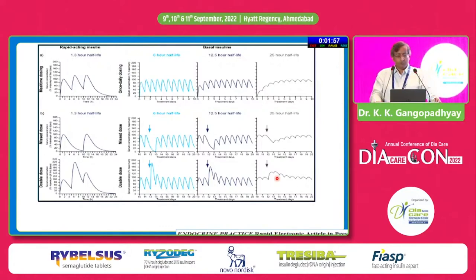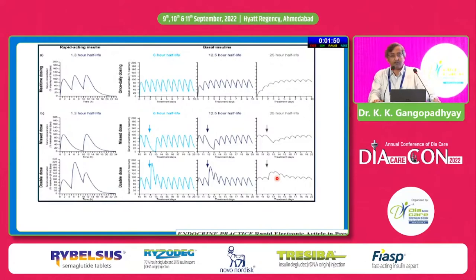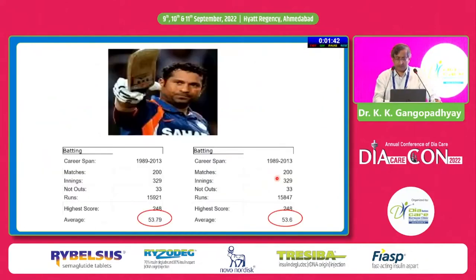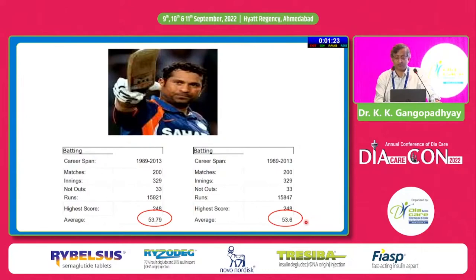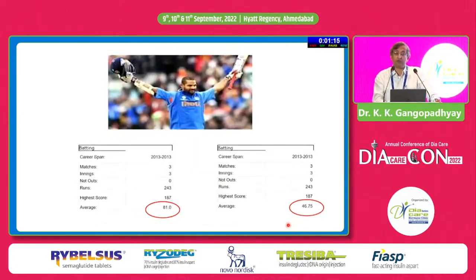I hope you follow cricket. I have given an example from cricket. Sachin Tendulkar — his batting average is 53.79. This represents a long-acting basal insulin. In the last match he made 74 runs; if he had made 0 runs his average would be 53.6 — not much difference. If he had made 200 runs, it would be about 53.85 — still not much difference. On the other hand, Shikhar Dhawan, when he first started — in his three matches his average was 81. If he had made 0 in one of them, his average would have dropped to 46. This is a bolus insulin — one dose dramatically changes the picture.